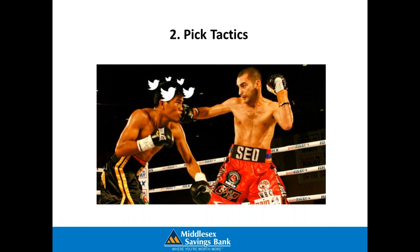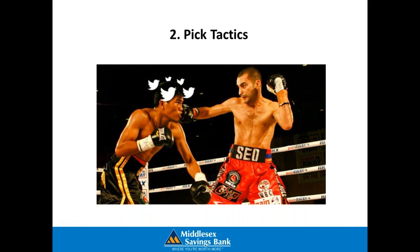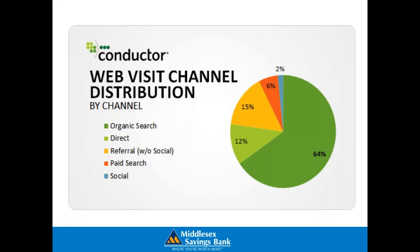At number two, pick tactics that you feel you can realistically implement with an understanding of what's working for other people. According to Conductor, one of the largest search engine optimization software programs, SEO drives 64% of the traffic to websites. Only 2% is coming from social media and 6% from paid search. Another study by BrightEdge has SEO at over 50% and social media around 5%. Social media is critically important, but it's also important to understand which tactics are responsible for most interactions on the internet and what to expect from each tactic. It's also important to optimize for a variety of tactics because that is how you're going to build the strongest digital presence.